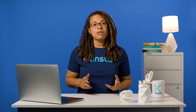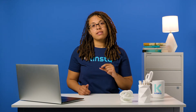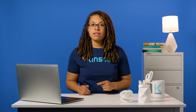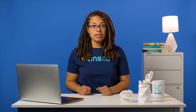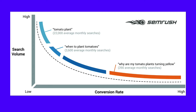Long tail keywords are three-plus word phrases that are very specific to whatever you're selling or the information you're providing on your blog. Notice how as the keyword becomes longer and more specific, the conversion rate increases. This is one of the benefits of long tail keywords, along with the fact that they're often easier to rank for because they're less competitive.